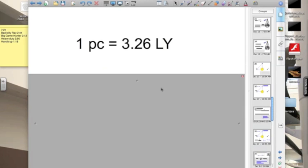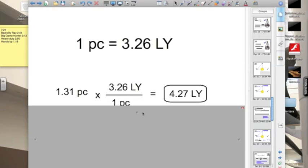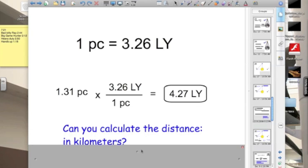That's great, but how far is a parsec? Scientists have measured the distance to 10,000 nearby stars using this method, and they have calculated that 1 parsec is equal to 3.26 light years. So our star then is 4.27 light years away.